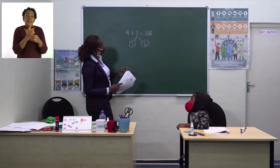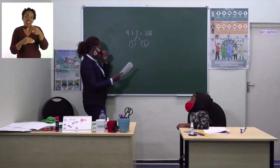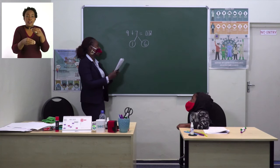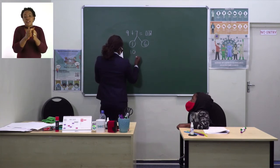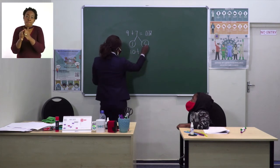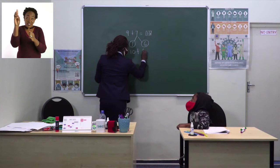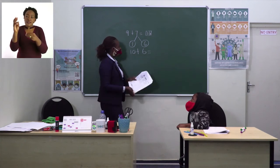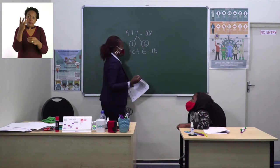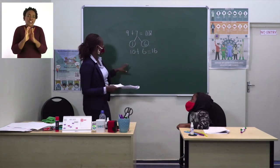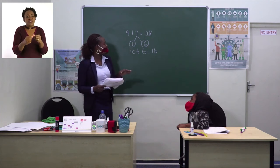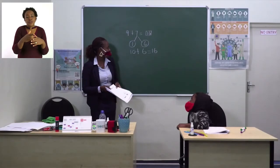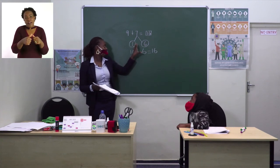We come to the next stage where we want to find the 10: 9 plus 1 equals 10. Then we bring down the 6, so it will be 10 plus 6 equals 16. I want you to follow my example and the examples in the booklet to do the other sums. Thank you so much, grade 2s and grade 3s. Remember to keep on revising.